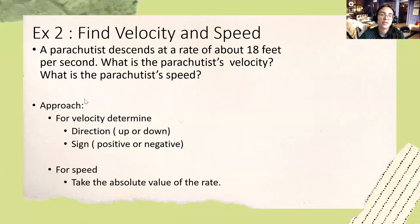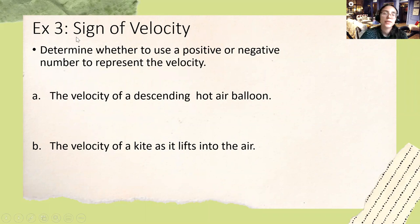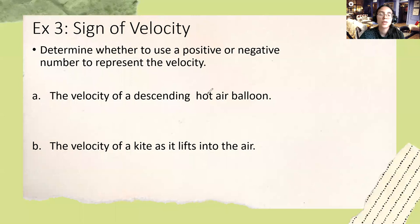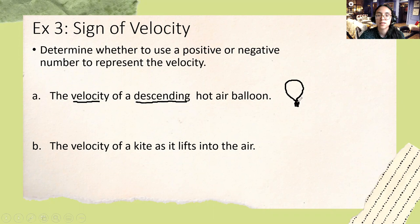If you have any questions, go ahead and leave them in the comments. For example number three, we're going to practice assigning the sign to velocity. The problem reads: determine whether to use a positive or negative number to represent the velocity. For the first scenario — the velocity of a descending hot air balloon — 'descending' means it's going down, so the velocity is going to be negative.